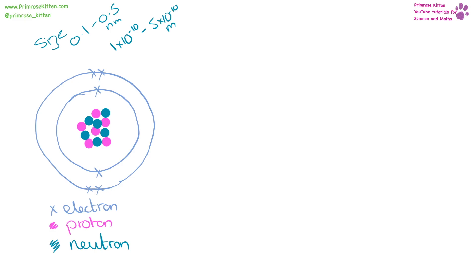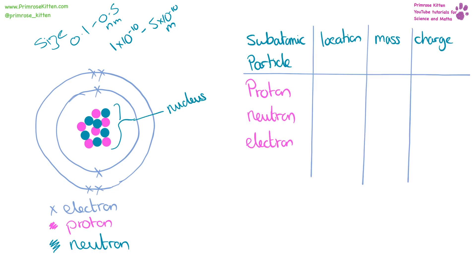Inside our atom we have protons and neutrons, and in the shells on the outside we have electrons. This bit in the middle is called the nucleus. Protons and neutrons are located in the nucleus, whereas electrons are in the outer shells. Protons have a mass of one, neutrons have a mass of one, and electrons are incredibly tiny — their mass is one two-thousandths that of a proton or neutron. Protons have a charge of plus one, neutrons have no overall charge, and electrons have a charge of minus one.